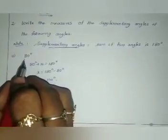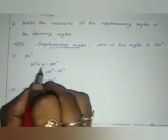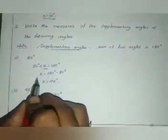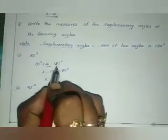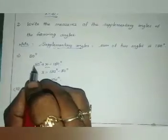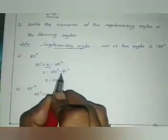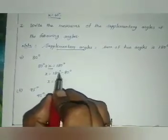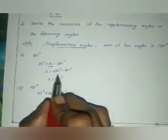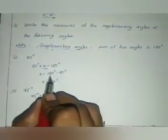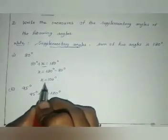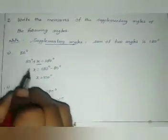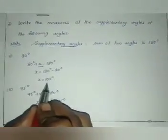The first one is 80 degrees. So 80 degrees plus x equals 180 degrees. We are going to find x. Taking the 80 to the other side gives minus 80, so x equals 180 degrees minus 80 degrees. When we subtract, we get x equals 100 degrees. So the supplementary angle of 80 degrees is 100 degrees.